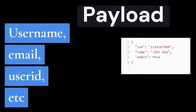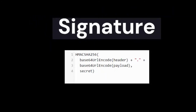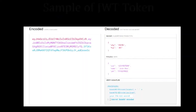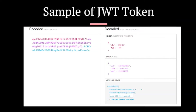The payload contains information about the user that is logged in, such as username, email address, user ID, etc. The signature is the most important part of the JWT token — it is signed by the server using the secret key and the algorithm mentioned in the header. To put it all together, we Base64 URL-encode the signature and join together the three parts.